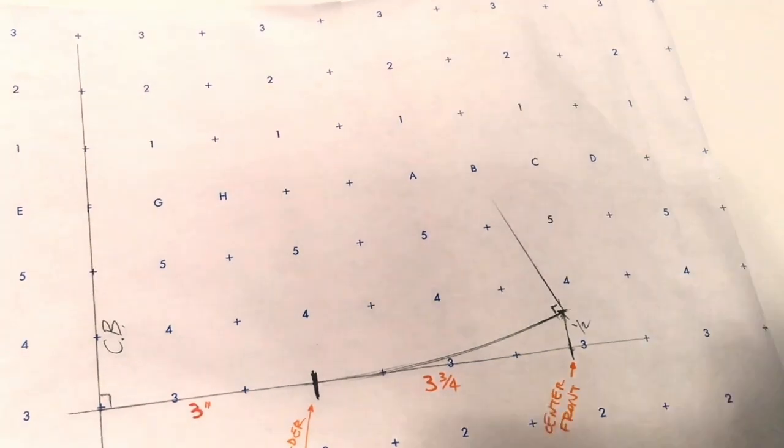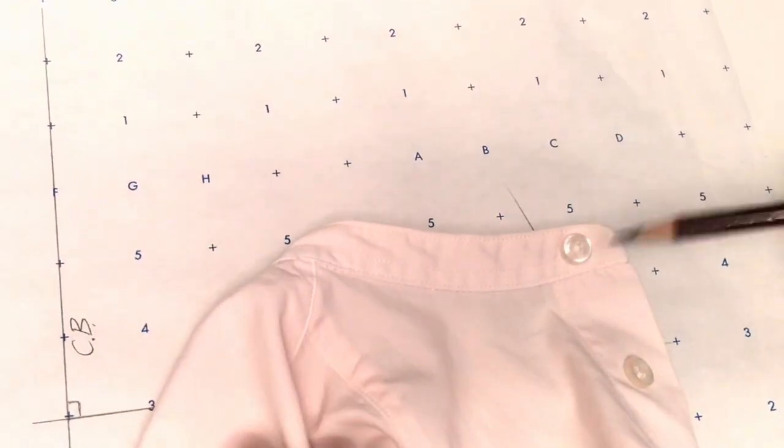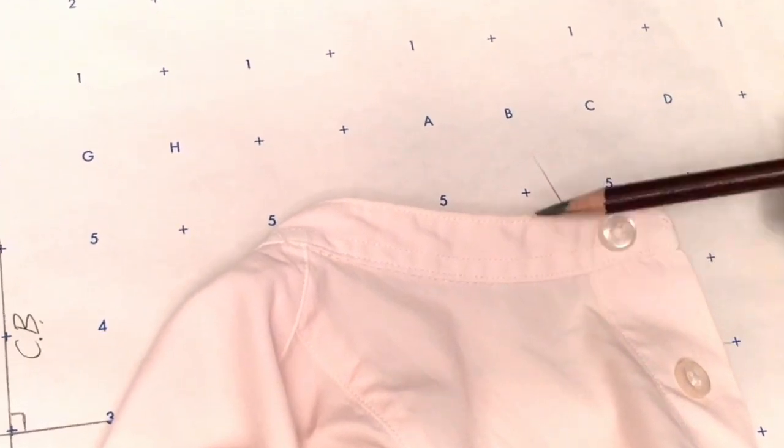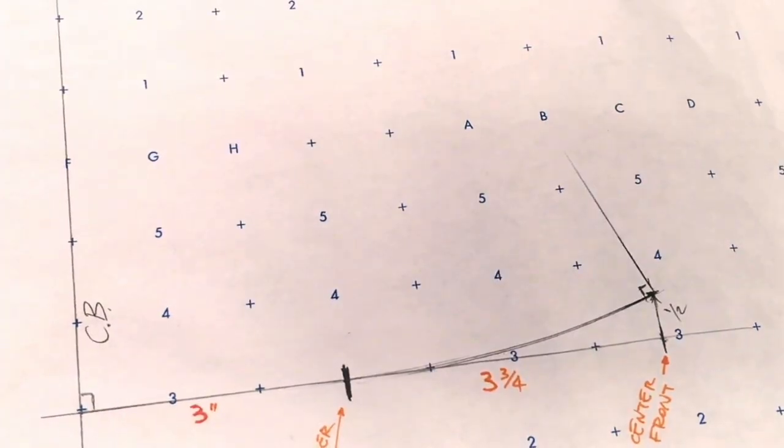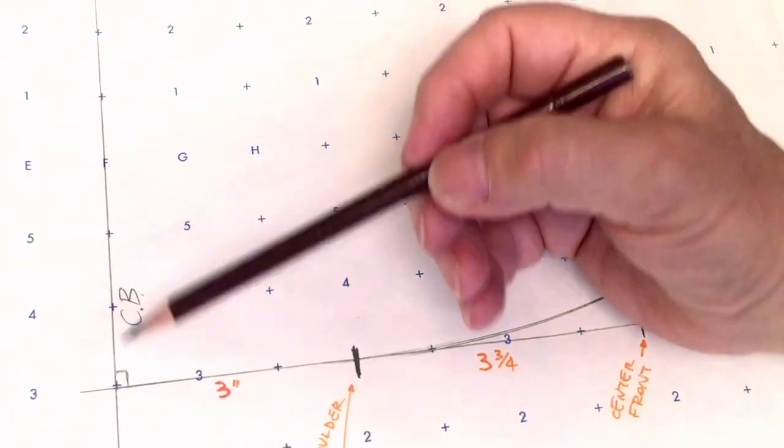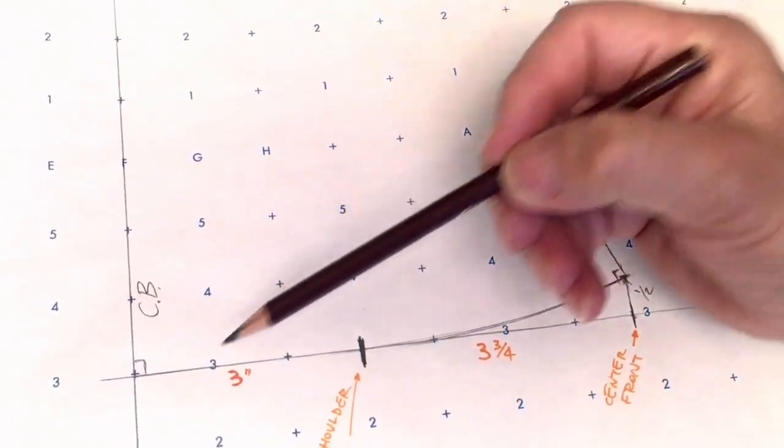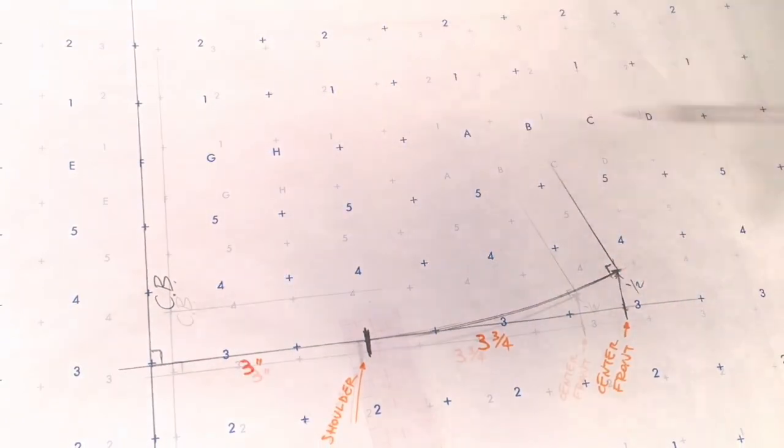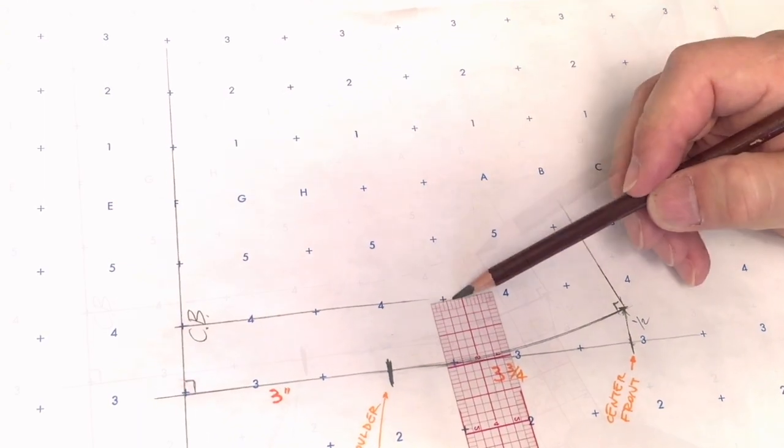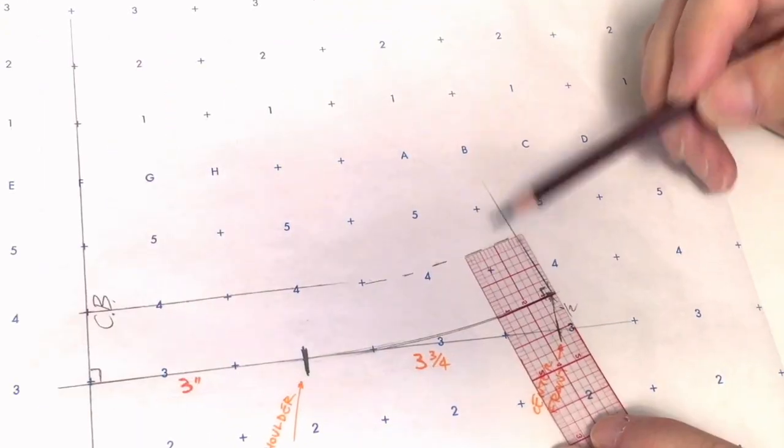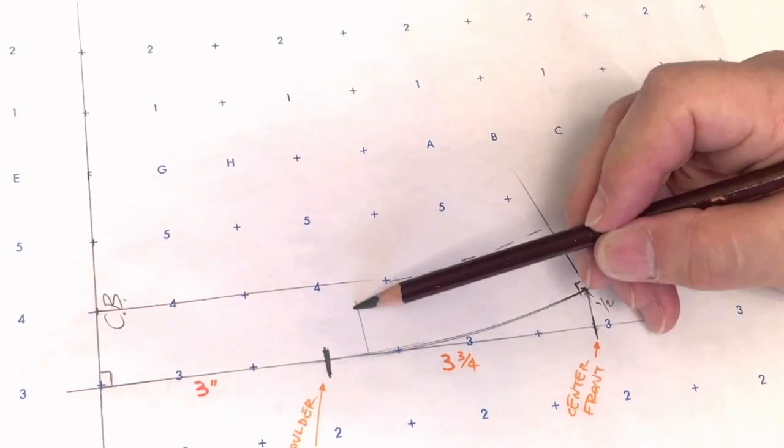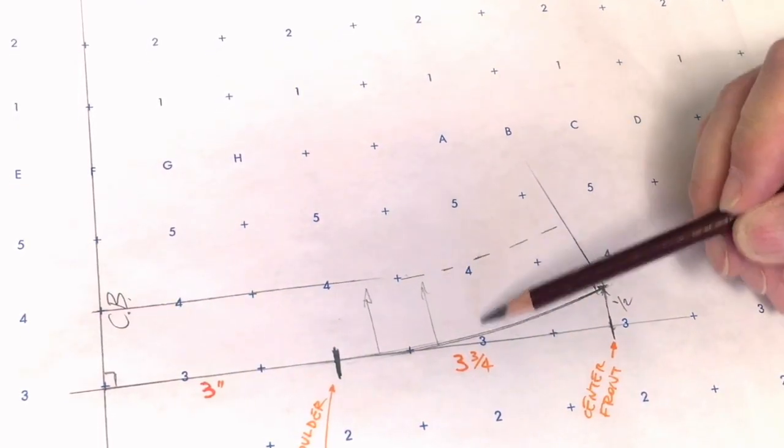Next we're going to figure out the size of our mandarin collar. In other words, how big is this collar right here? What is this measurement? I'm going to make mine one inch. So from this line right here, I'm going to measure one inch. I'm going to measure from the neckline, go up one inch all the way up, just like that.